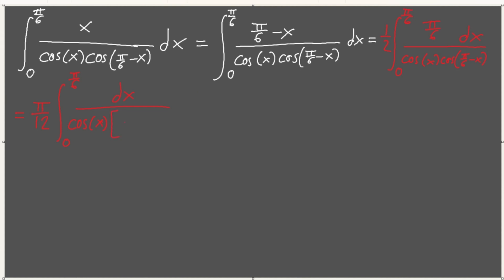Cosine of pi over 6 minus x. Let's see. We know our trig identities, right? This would be cosine pi over 6. What is cosine pi over 6? You can draw the unit circle if you need to. Pi over 6, that's like root 3 over 2. And then cosine of x plus and sine of pi over 6 and sine of x.